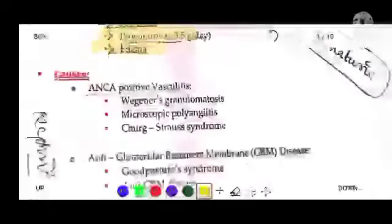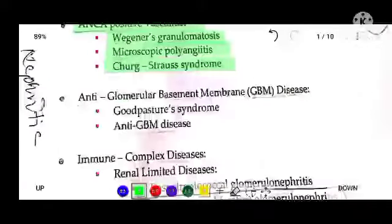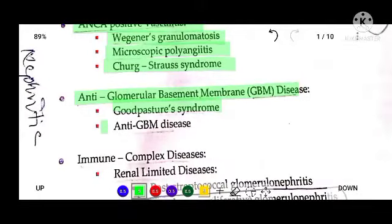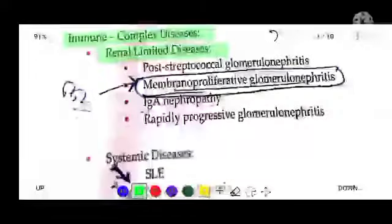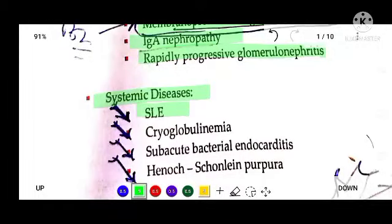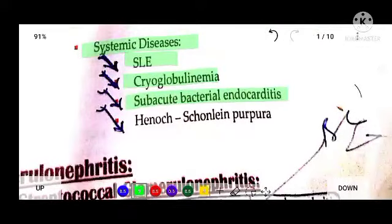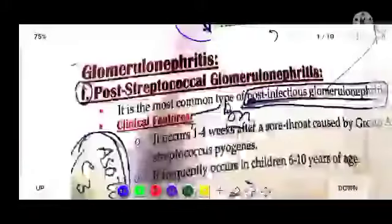Causes of nephritis syndrome include ANCA-positive vasculitis: Wegener's granulomatosis, microscopic polyangiitis, Churg-Strauss syndrome, and anti-glomerular basement membrane disease such as Goodpasture syndrome. Immune complex diseases include post-streptococcal glomerulonephritis, membranoproliferative GN, IgA nephropathy, and rapid progression glomerulonephritis. Systemic diseases include subacute bacterial endocarditis and Henoch-Schönlein purpura.